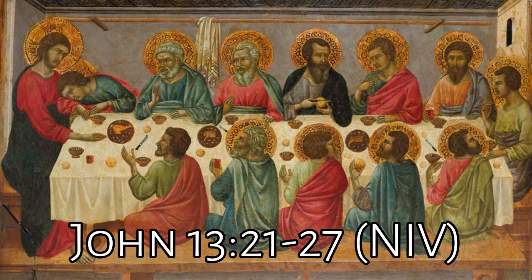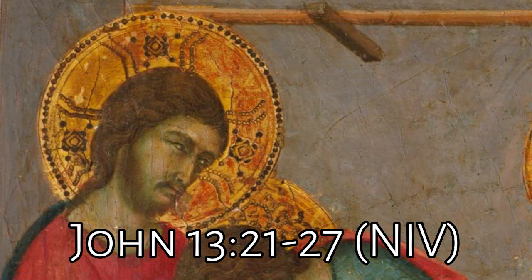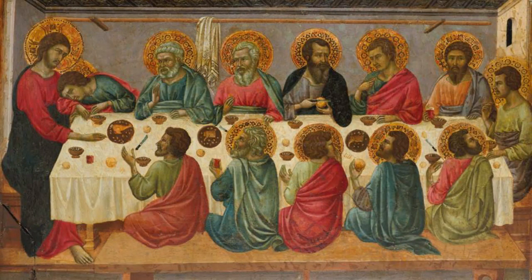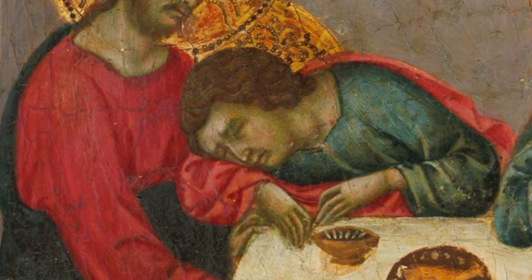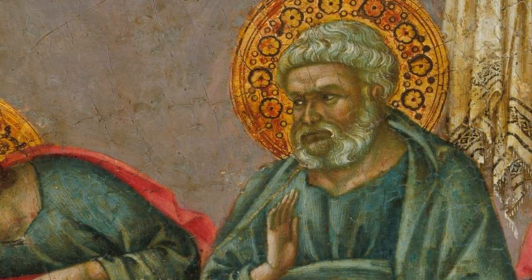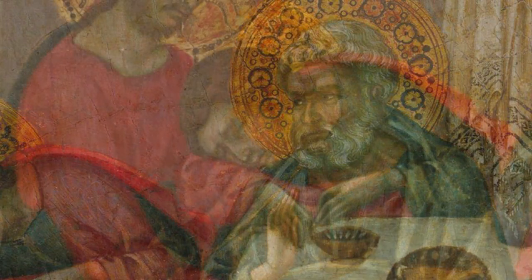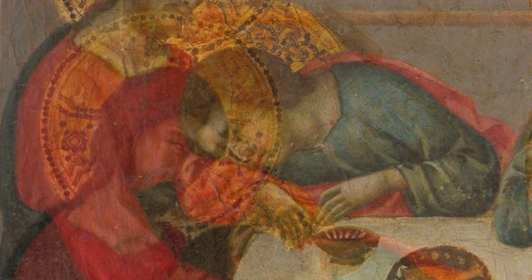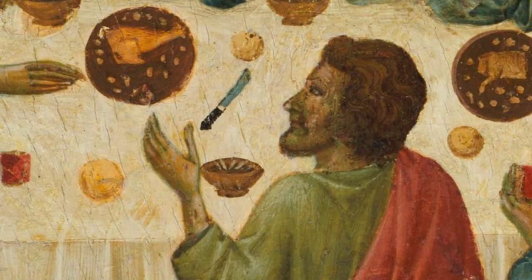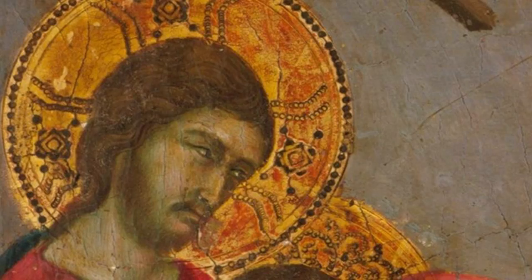After he said these things, Jesus was deeply disturbed and testified, 'I assure you, one of you will betray me.' His disciples looked at each other, confused about which of them he was talking about. One of the disciples — the one whom Jesus loved — was at Jesus' side. Simon Peter nodded at him to get him to ask Jesus who he was talking about. Leaning back toward Jesus, the disciple asked, 'Lord, who is it?' Jesus answered, 'It's the one to whom I will give this piece of bread once I have dipped it into the bowl.' Then he dipped the piece of bread and gave it to Judas, Simon Iscariot's son. After Judas took the bread, Satan entered into him. Jesus told him, 'What you are about to do, do quickly.'